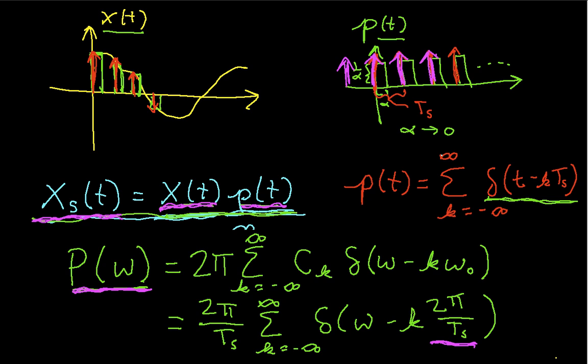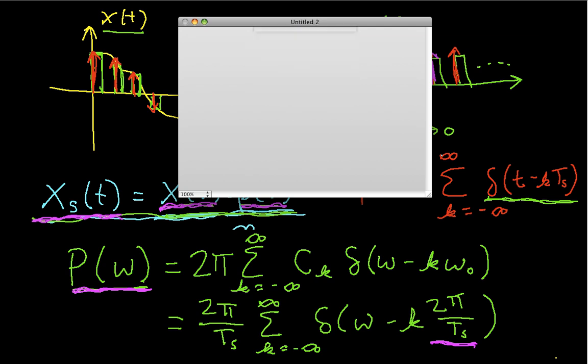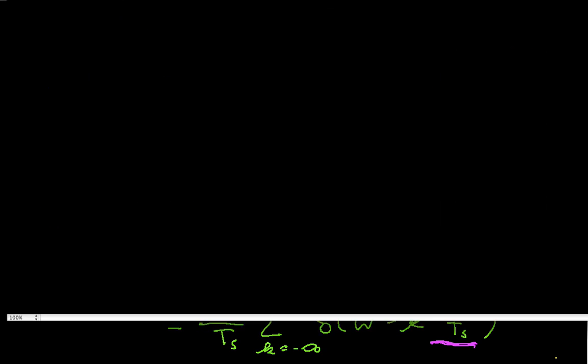And now, the thing we need to do is figure out what the Fourier transform of x of t times P of t is. So to do that, we'll bring up a fresh window. And we have x of t times P of t.